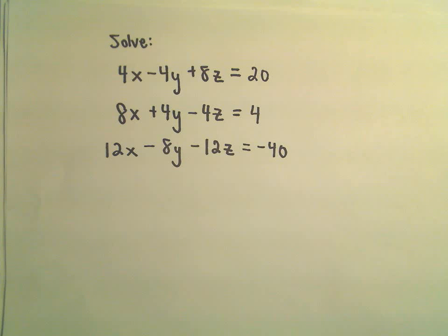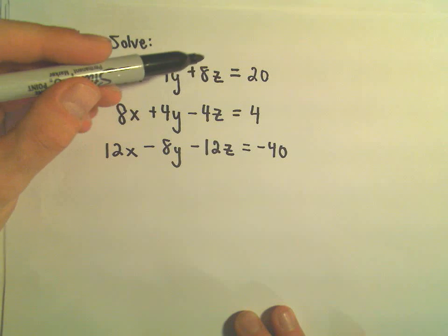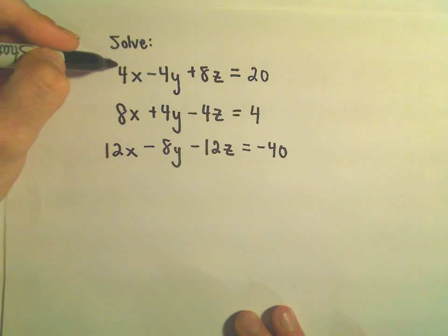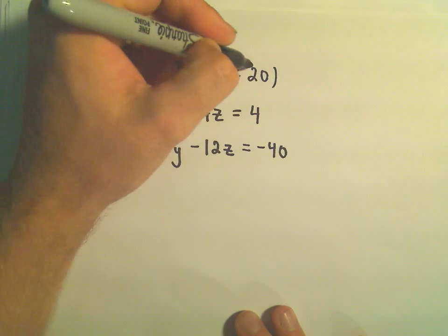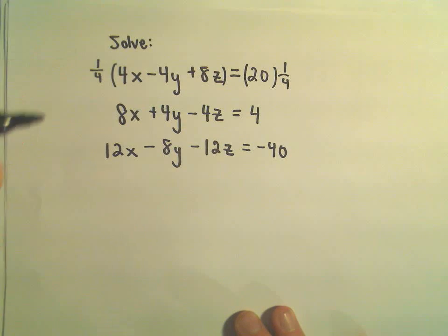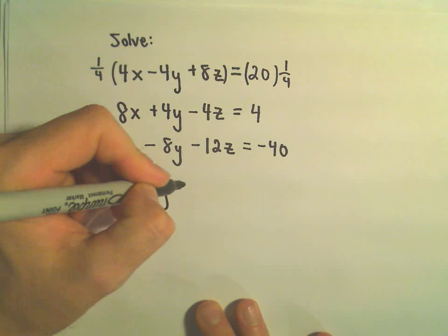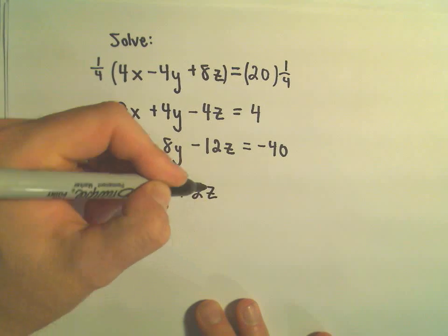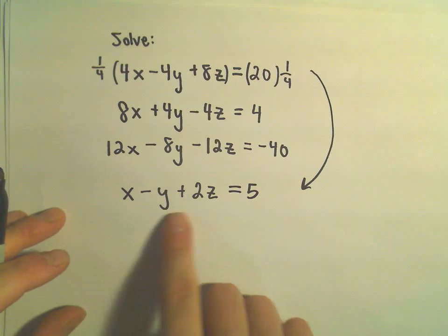So the first thing I'm going to do in this case, and this is something you definitely don't have to do, ultimately we're going to try to eliminate variables. This is the type of thing that if I have to do by hand, I like to make the numbers as small as possible. Notice we can take each side of our first equation and we can divide by 4, or equivalently we could multiply the left side by 1 fourth and the right side by 1 fourth. So if we do that, we would just be left with x minus y plus 2z equals 5. So I'm just taking my first equation and just simplifying it.